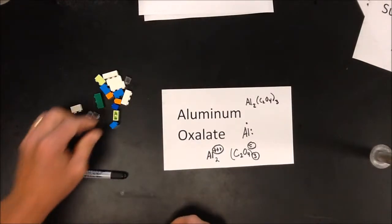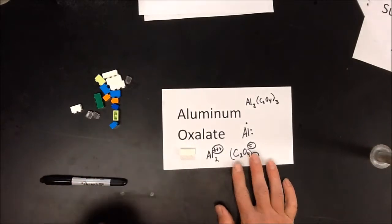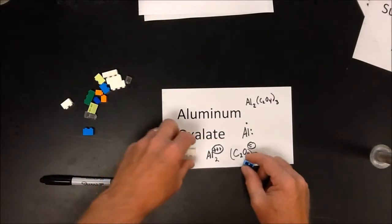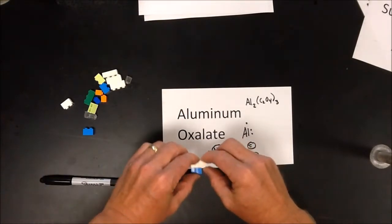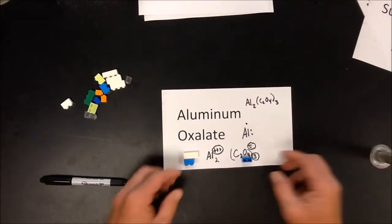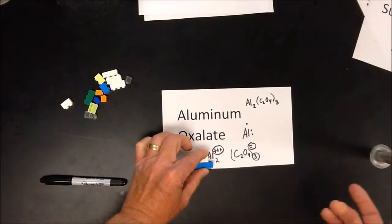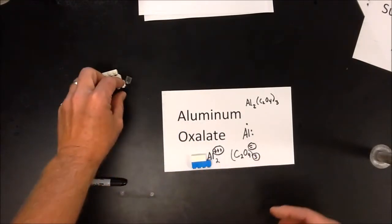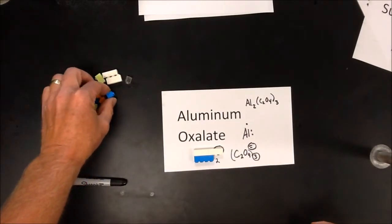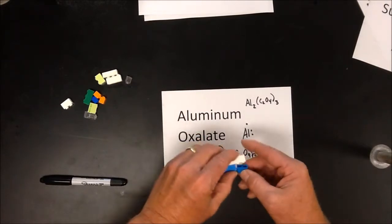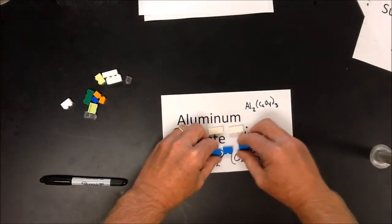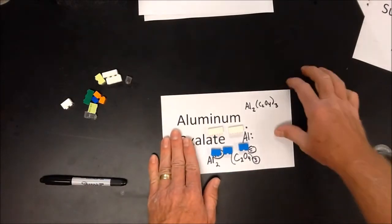The Lego model helps visualize this. A white three-studded Lego represents aluminum (plus 3) and a blue two-ported Lego represents oxalate (minus 2). Snapping them together leaves an empty spot, so I add another oxalate — then another aluminum — then a final oxalate. The completed symmetrical block uses two aluminums and three oxalates, confirming Al₂(C₂O₄)₃.